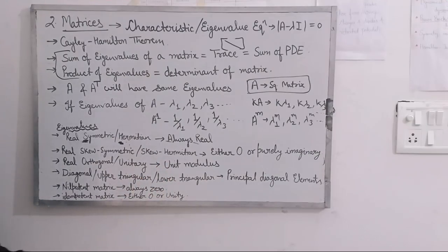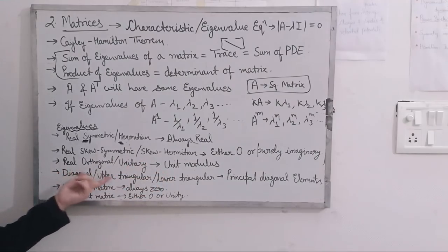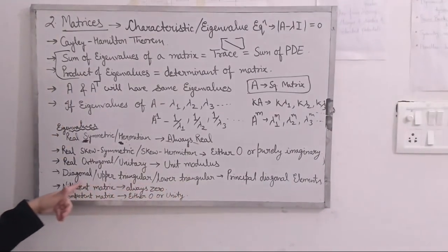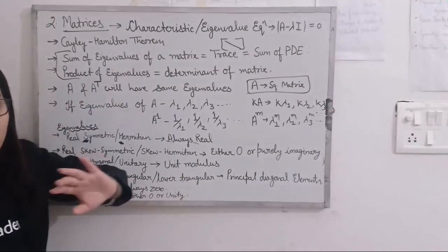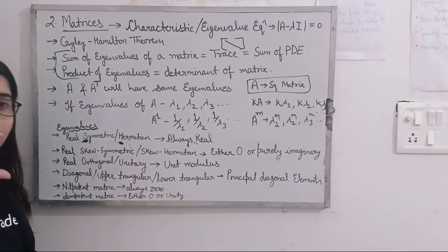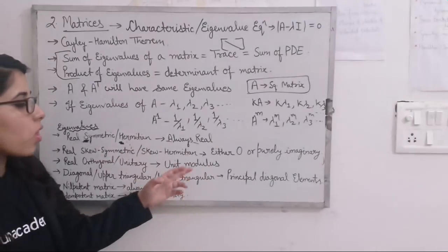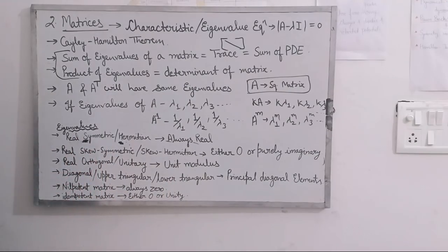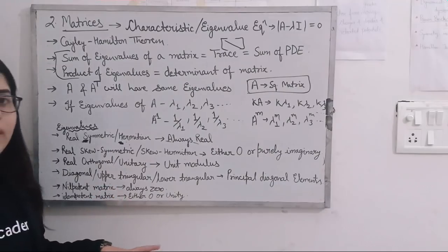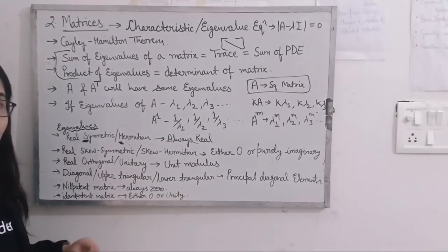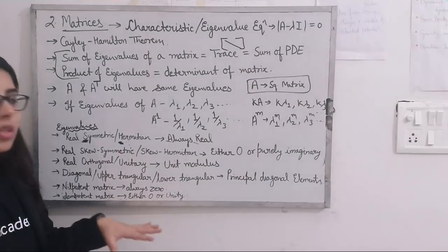For unitary matrices, eigenvalues have unit modulus — meaning their mod equals 1, so they can be minus 1 or plus 1. For diagonal matrix, upper triangular matrix, and lower triangular matrix, the eigenvalues are equal to the principal diagonal elements of those matrices — you can directly state that. For nilpotent matrices, eigenvalues are always equal to zero. For idempotent matrices, eigenvalues are either zero or one.